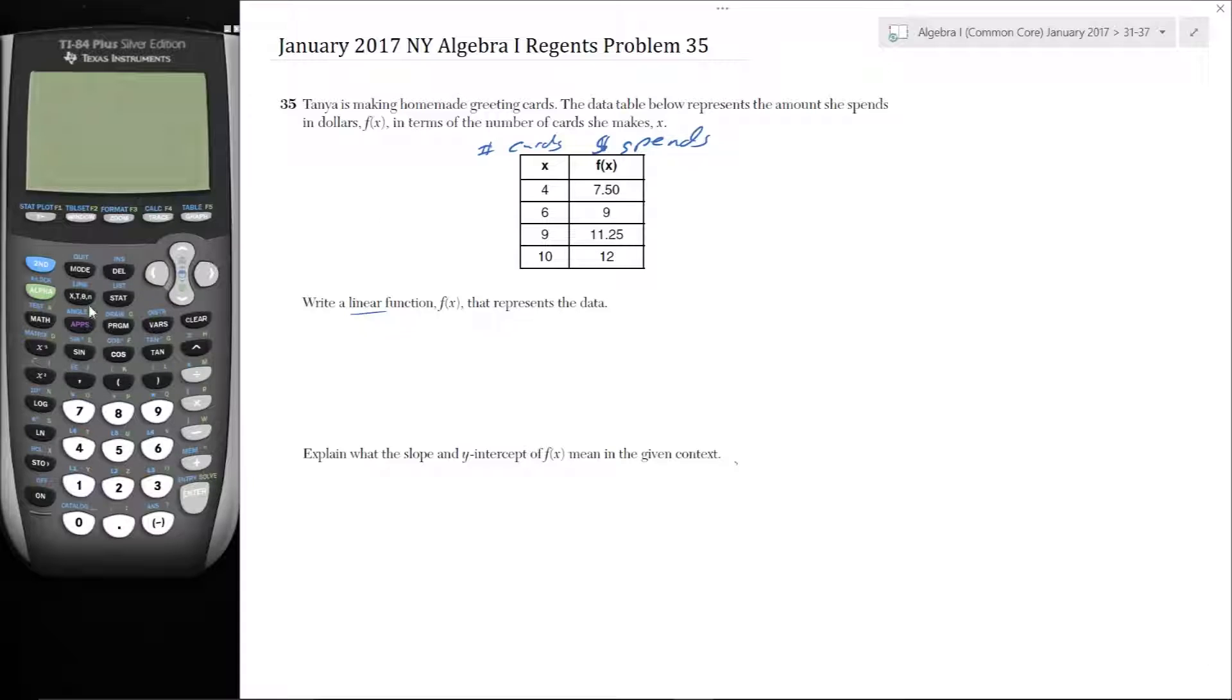So we should be able to do this algebraically. You can do this on the calculator by going to STAT, create a list: the list 4, 6, 9, 10, and the second list L2: 7.59, 11.5, 12. And then use the linear regression function to get a linear equation. But we're going to do this algebraically.